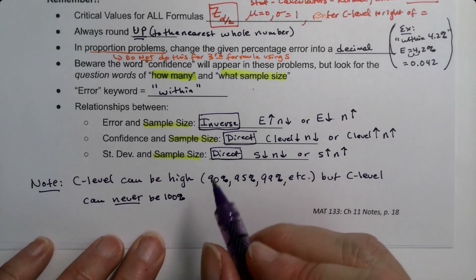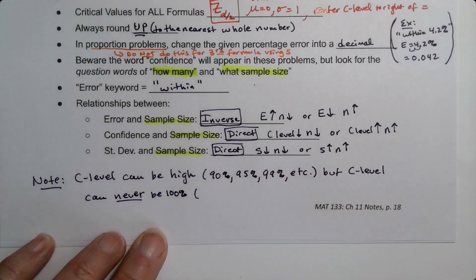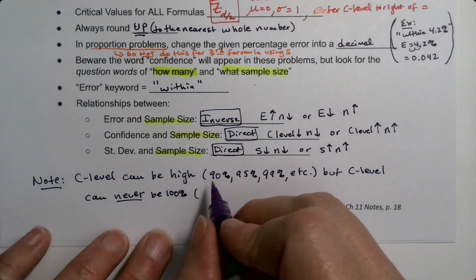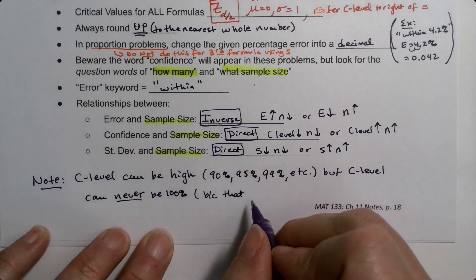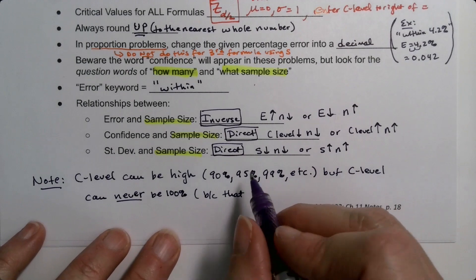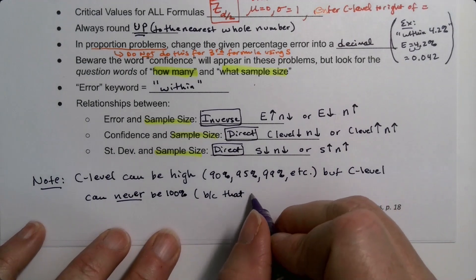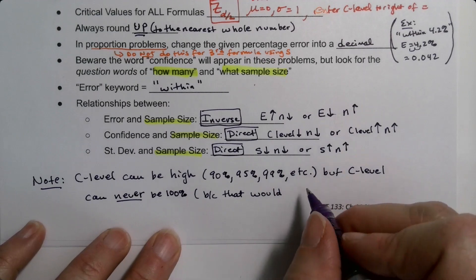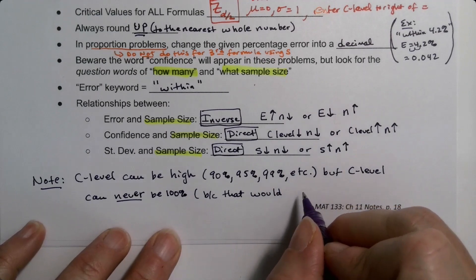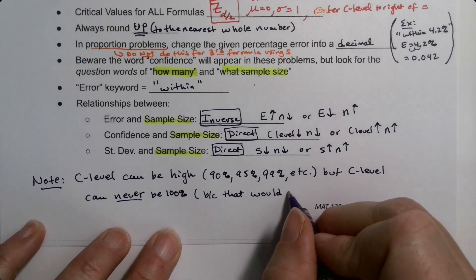Because that would imply we surveyed or knew everything about the whole population. And that's not true for us. Not when we're doing these types of inferential statistics. If you have the whole population, then you're not inferring anymore. Then you're just describing. We'd be in descriptive statistics, which is the first portions of the course, not the last piece.